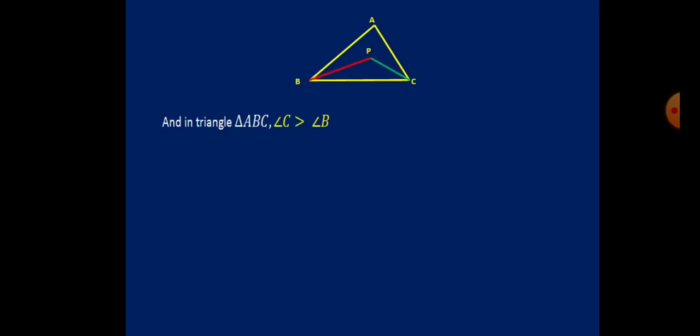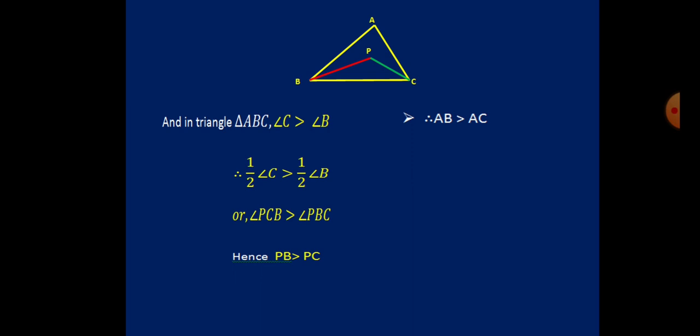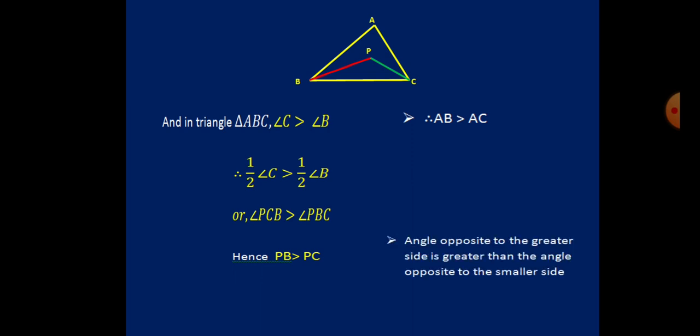In the triangle, angle C is greater than angle B, because AB is greater than AC, and angles opposite to greater sides are greater. Therefore, one half of angle C is greater than one half of angle B. That means angle PCB is greater than angle PBC. From this, PB is greater than PC, as the side opposite to the greater angle is greater.